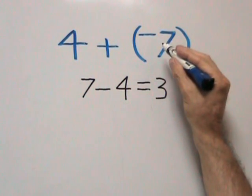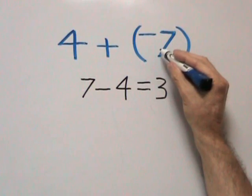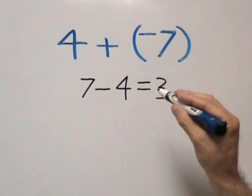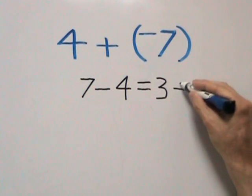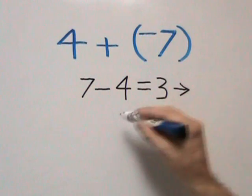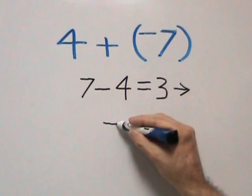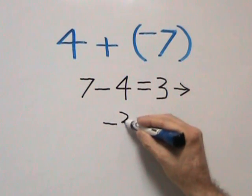Since 7 is our larger number and 7 is negative, our final answer is going to be negative 3.